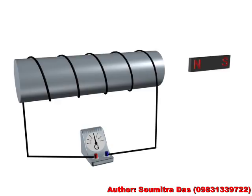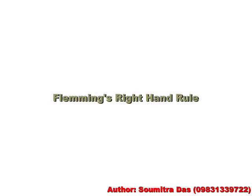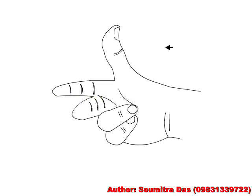The direction of current is given by Fleming's right-hand rule. This rule is like this: stretch the thumb, forefinger, and central finger of the right hand mutually perpendicular to each other.